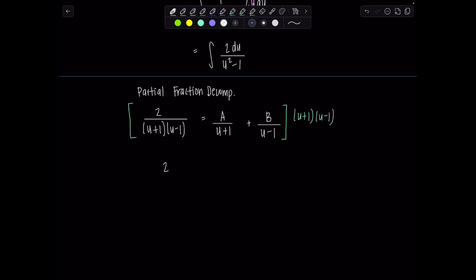And then we're left with 2 equals a times u minus 1 plus b times u plus 1. Now to solve for a and b, you don't have to multiply everything out. In this case, you could just let u equal 1. And then we have 2 equals a times 0. That's why I chose u to be 1, so that that whole term would be 0. Plus b times 2. So b is equal to 1.